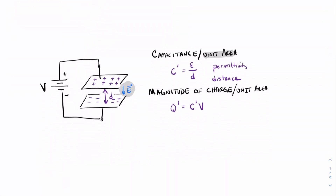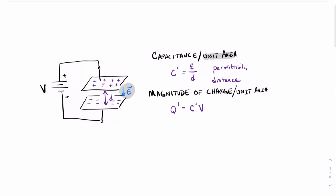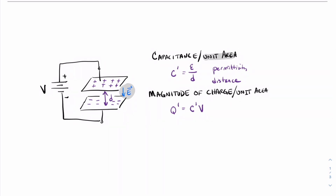To better understand the MOS capacitor, it's helpful for us to first look at the parallel plate capacitor. Over here on the left, I've drawn two parallel plates separated by a distance d with an electric field E and a voltage applied across the two parallel plates. When we have the voltage applied across the two parallel plates, what we see is a collection of charges — positive charges on the top plate and negative charges on the bottom plate — building up, separated by the distance d, which is what gives rise to the electric field.